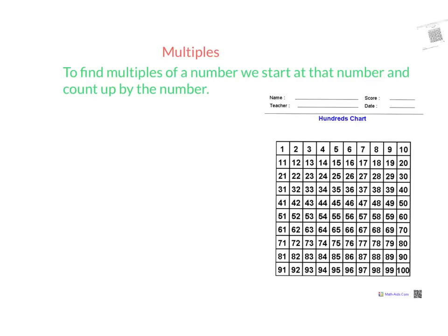So let's say I'm looking at the multiples of 4. All I'm doing is I'm going to count up by 4. So 4 plus 4 is 8, and then I keep going, plus 4, and that goes to 12, and then I add 4 again, and it goes to 16, and I can keep going. So these are all multiples of 4, and each time all I'm doing is adding 4.